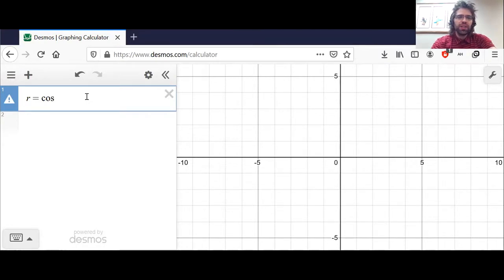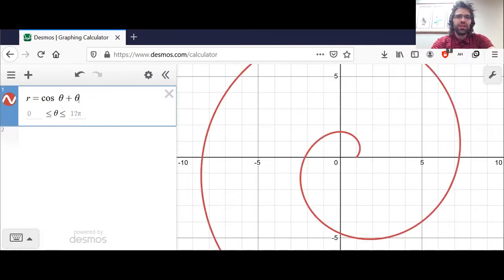We type r equals so it knows that we are doing polar coordinates. We type the letters theta to generate theta. r equals the cosine of theta plus theta.